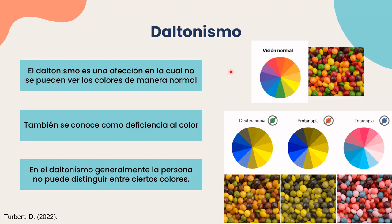En primer lugar, el daltonismo va a ser una condición en la cual no se pueden ver los colores de manera normal. A esto también se le conoce como deficiencia de color. En el daltonismo, por lo general, las personas no pueden distinguir entre ciertos colores. Por ejemplo, aquí encontramos una visión normal, donde podemos observar toda esta gama de colores.